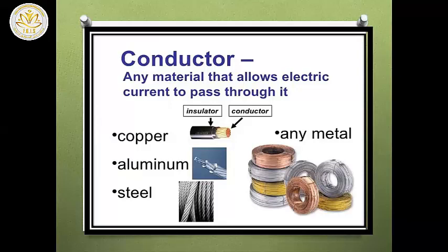The electrons must move through a conductor. What is a conductor? Any material that allows electric current to pass through it is called a conductor. For example: copper, aluminum, steel, iron. You can see the electric wire made of copper and covered with plastic. The copper wire is a conductor to allow electricity to pass through it, and it is covered with insulator to avoid electric shock.